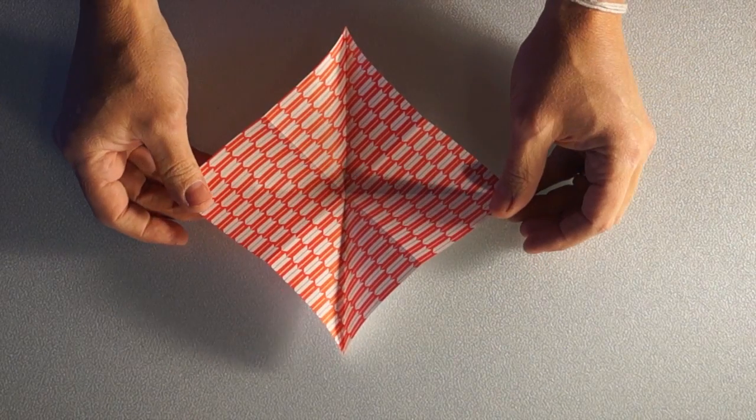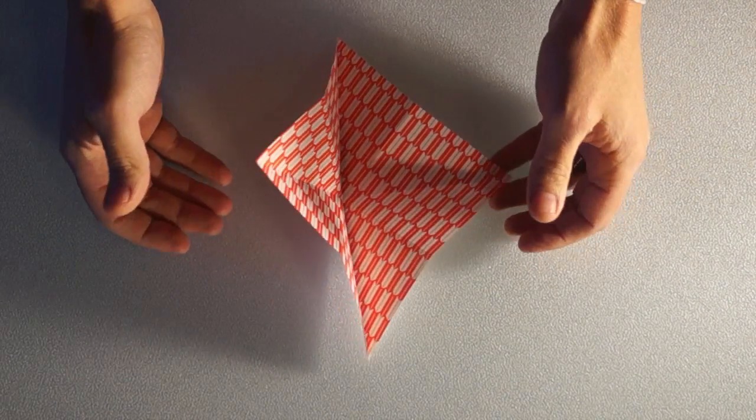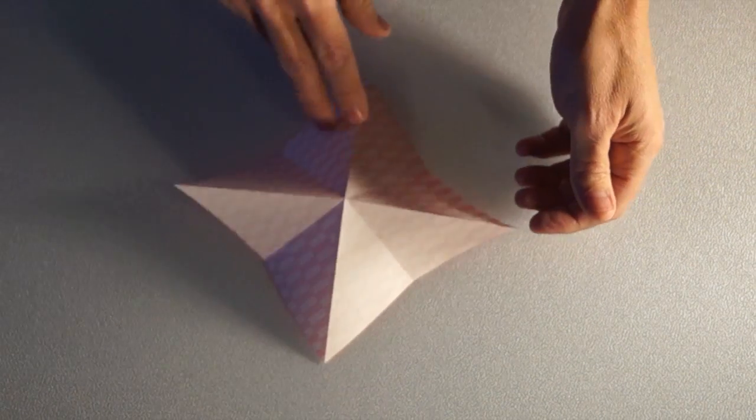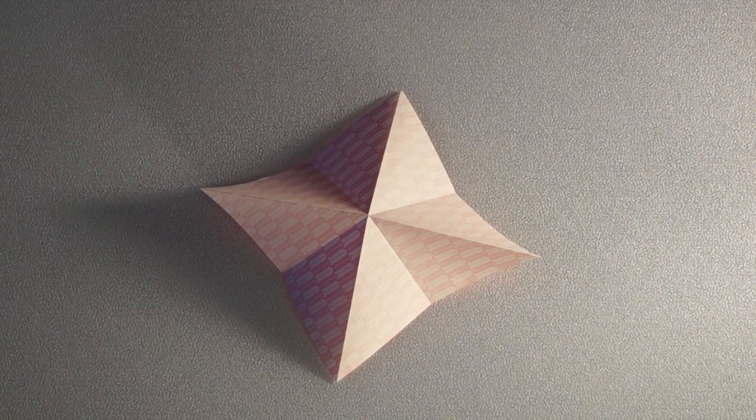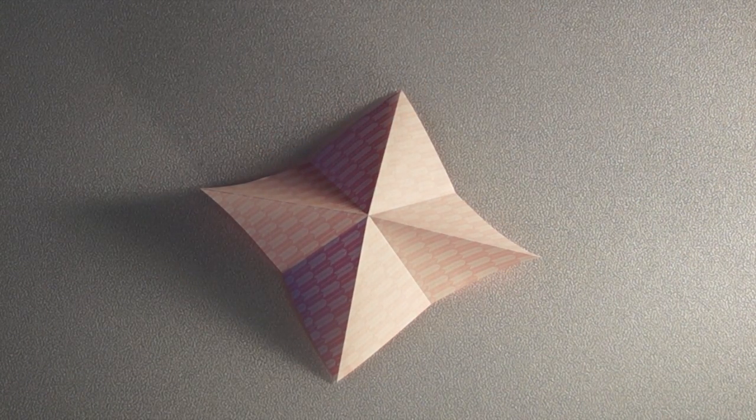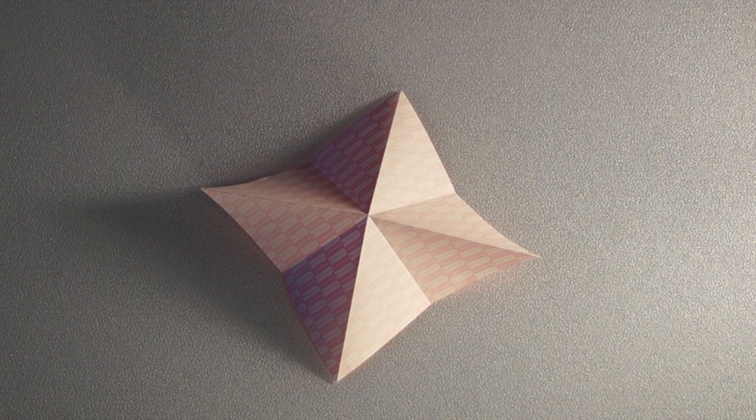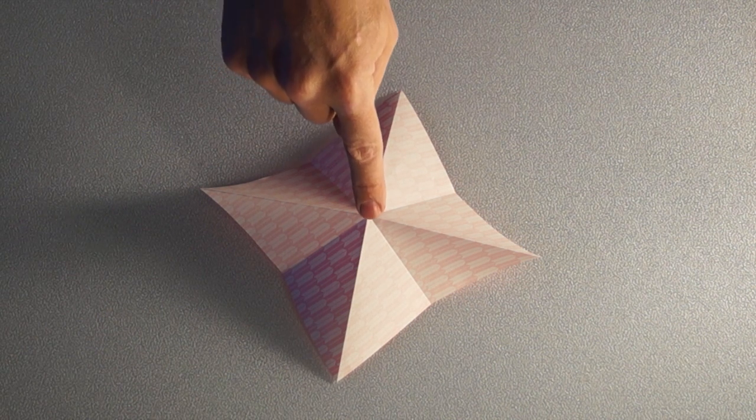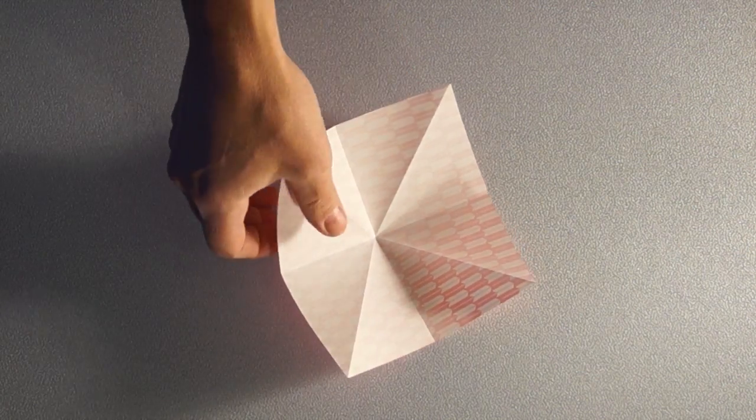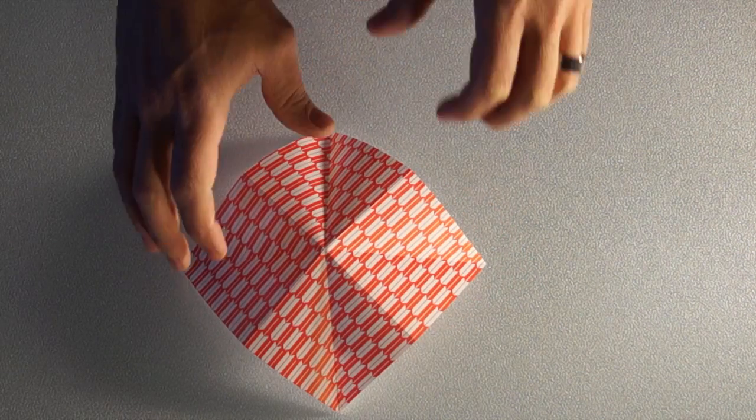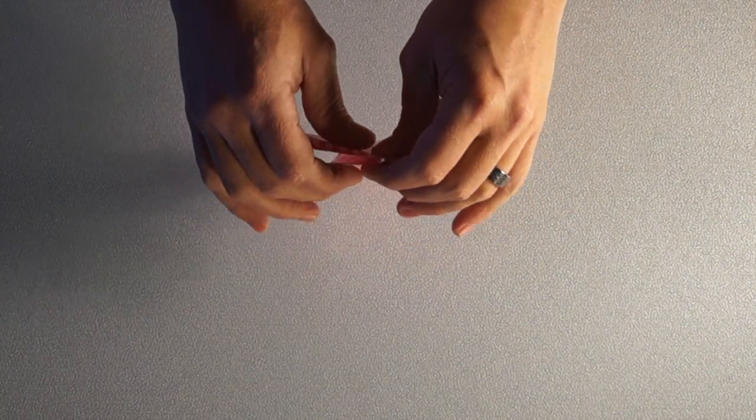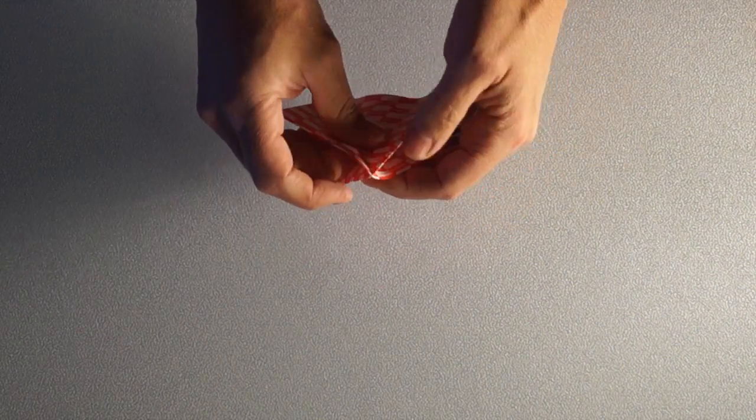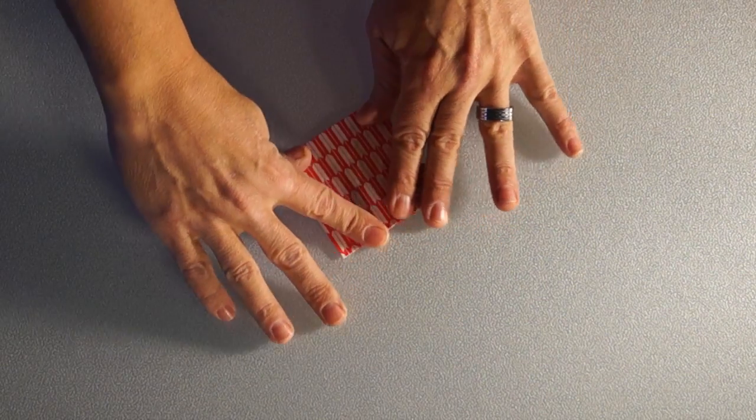And I'm going to unfold it again. So as you can see, I have some valley folds on this side. If I take and set it up so that it's like a hill, this is actually how I would start a water bomb base. But I want a preliminary base so I'm just going to take my finger and push down in the center and flip this over. And then I'm just going to pinch up all the pieces and I'm going to lay it flat on the ground.